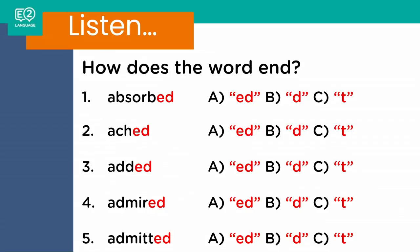Number one: absorbed. Number two: eight. Number three: added. Number four: admired. Number five: admitted.